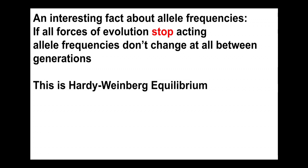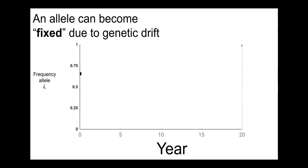What this looks like on a graph is that over time allele frequencies stay the same and continue to stay the same — they remain flat across generations.